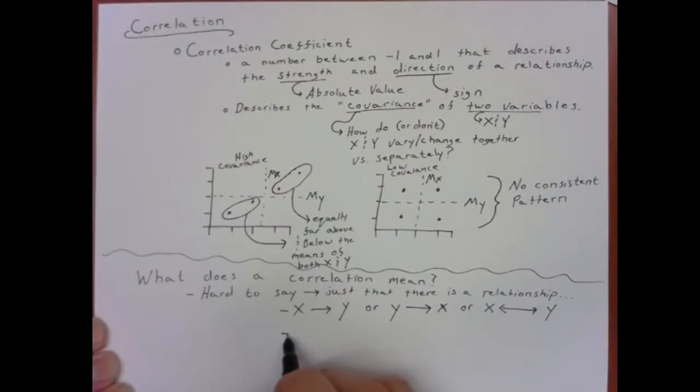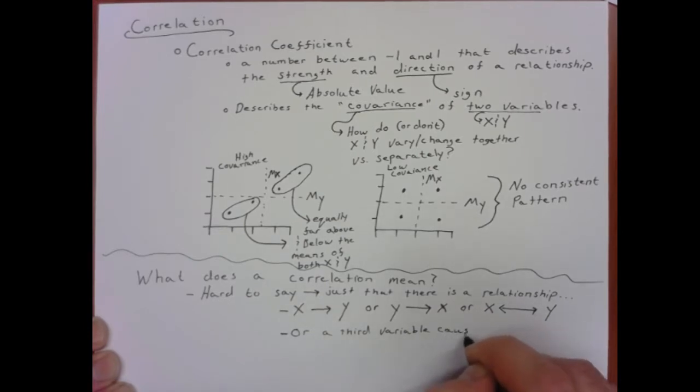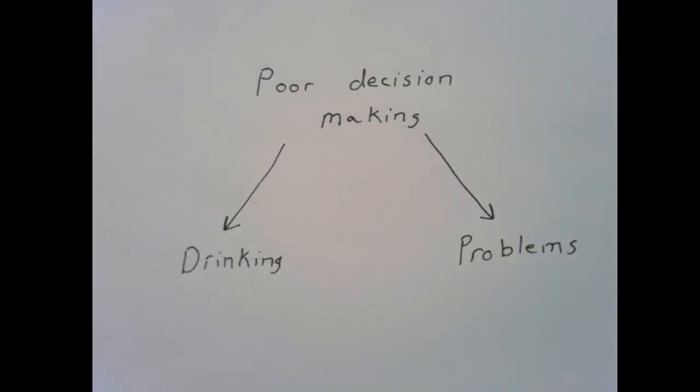Another problem that comes about is there may be some third factor that's at play because you don't have rigorous control. There could be something else that causes both x and y. Taking the drinking and the problems in one's life, perhaps this person is just a really poor decision maker, which leads them to decide to drink more often than they should and also just make bad decisions in their life, which causes problems. In this case, problems in their life and drinking may not actually be causally related at all. There is some third factor that is now the problem.